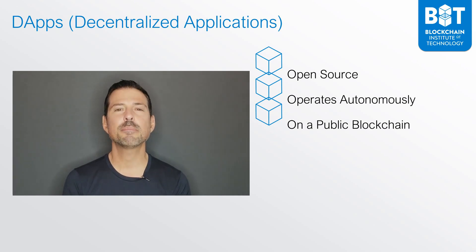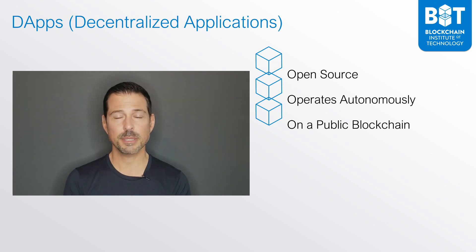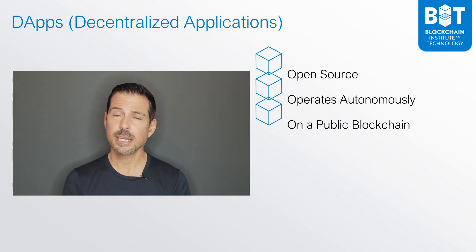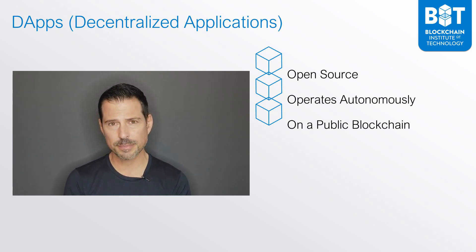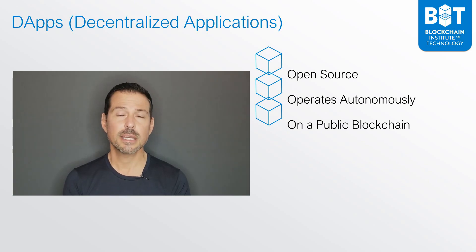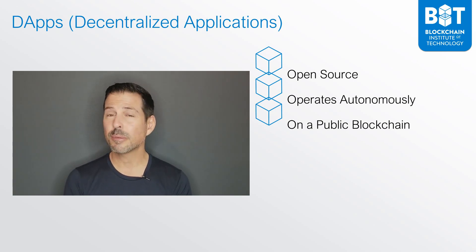Let's look at the example of Bitcoin, because Bitcoin is actually a dApp. It's a decentralized application which runs on a public blockchain. In Bitcoin, anybody can use Bitcoin. Another public blockchain is Ethereum.